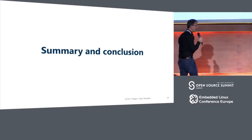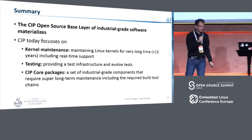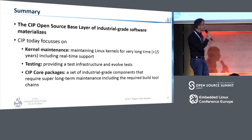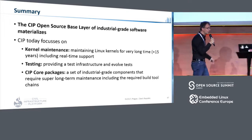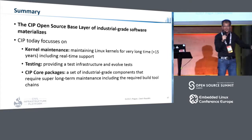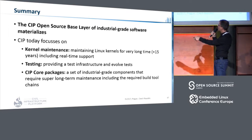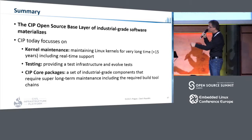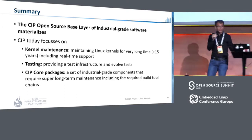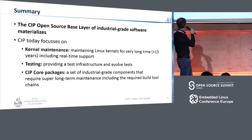Let me just take two minutes to summarize what we heard. CIP is the open-source base layer for industry — or at least will be in the future. We currently focus on kernel maintenance including real-time support, testing — which is very important for us to build a common test infrastructure to share test results inside the project and also outside — and the third point is CIP Core packages, really starting bottom-up with a minimal set which can be long-term maintained, which is much more complicated than just the kernel. And the kernel is complicated enough.